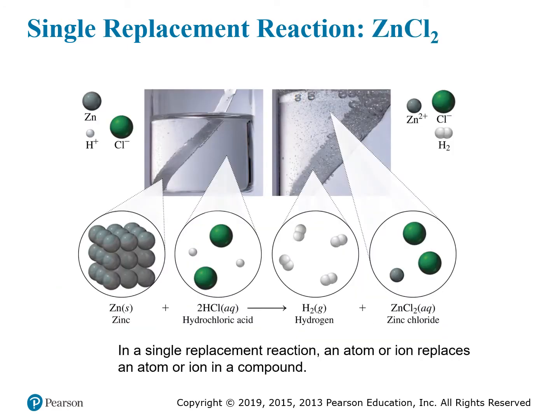Many single replacement reactions involve ionic compounds — typically a metal replaces the metal already present in an ionic compound. In this zinc and HCl case, HCl is not quite an ionic compound since H is not a metal, but it shares similar properties and a similar reaction occurs.